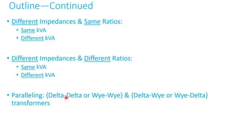Delta-delta or wye-wye basically have zero phase shift between the primary and secondary. These cannot be put in parallel with delta-wye or wye-delta because delta-wye or wye-delta have an inherent 30-degree phase shift.